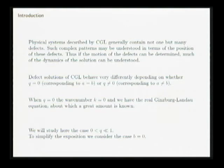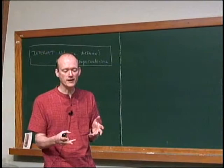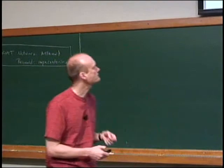In physical systems, it's interesting to look at one spiral, but if you put this equation with random initial data and solve it, you will get many spirals — many defect solutions. So often you're interested in not one, but lots of defects. The pattern you get can be quite complicated, and one way to understand it is to understand what the defects do: if I know where the defects move and where they are, then I've got a good idea of what the solution looks like. So I'd like to work out, given an initial configuration of defects, what's the law of motion for the defects?